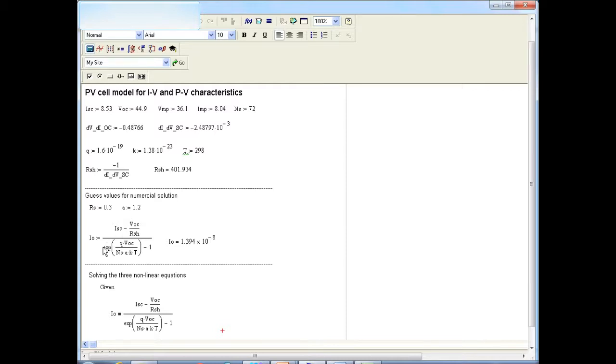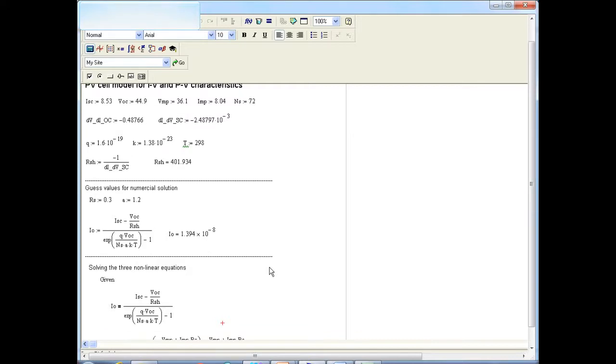Some nominal values: RS of 0.3 ohms, A which normally varies from 1 to 1.5 is chosen to be 1.2 here. So once we have chosen some values for A, we can actually get a closed form expression for IO as shown here.